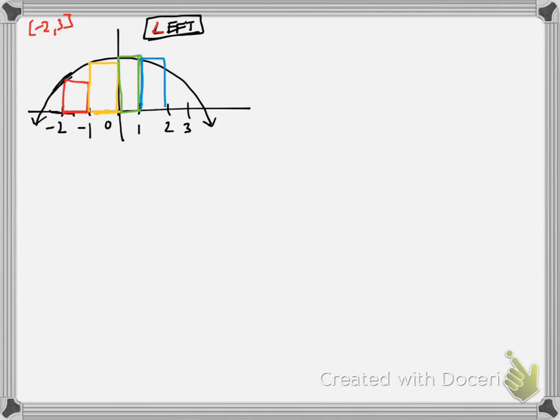And for the final rectangle, it says to use five rectangles initially. We're going to use the left endpoint, which is two. There we go. There are our rectangles. Now all we've got to do is find their areas.